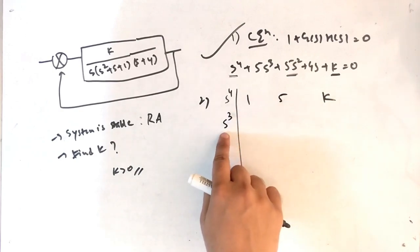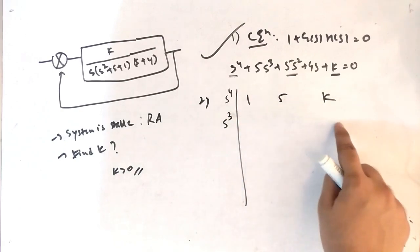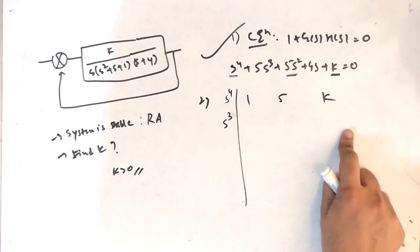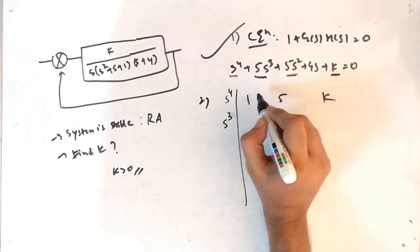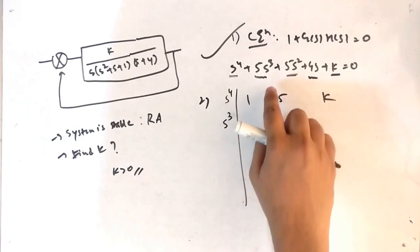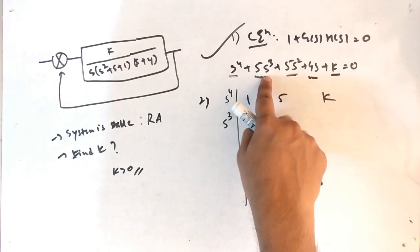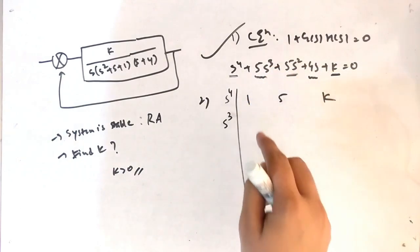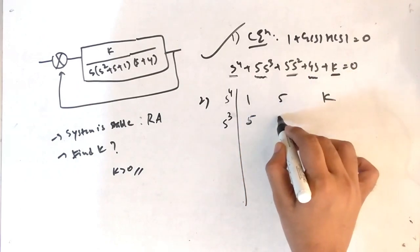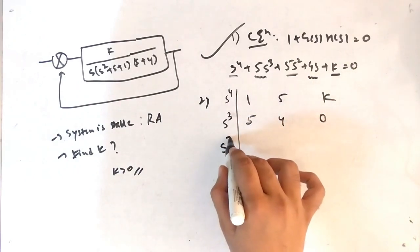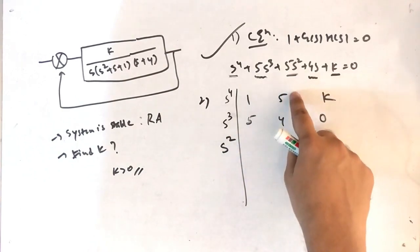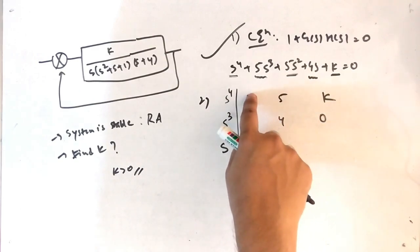Next, decrease the power to s³ — now you have the odd powers of s. All coefficients of odd-powered terms go in this row: s³ and s¹ are both odd. So write the coefficients: 5, 4, 0. The next term is found using the Routh array formula: (5×5 − 4×1) / 5.